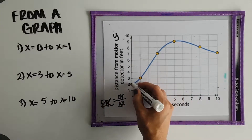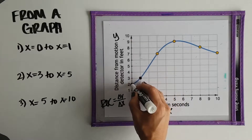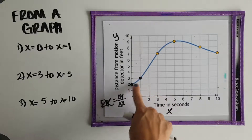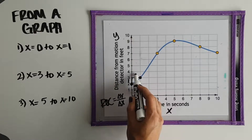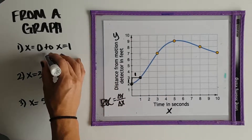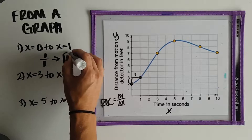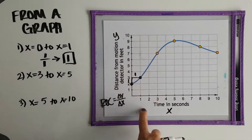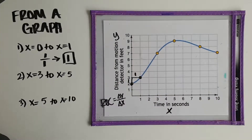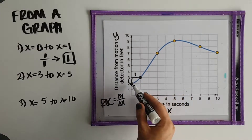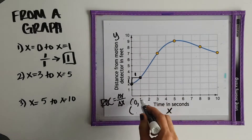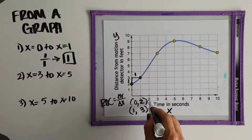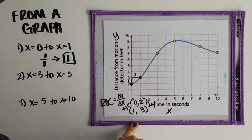Looking at the interval x equals 0 to x equals 1: when x equals 0 we're at one point on the graph, and when x equals 1 we're at another point. The change in y is up 1 space and the change in x is over 1 space. So the rate of change is 1 divided by 1, which is 1. This graph represents distance over time, so we're increasing distance by 1 foot per second as an average rate of change. This is the same as reading ordered pairs (0, 2) and (1, 3) from a table — the differences are the same.